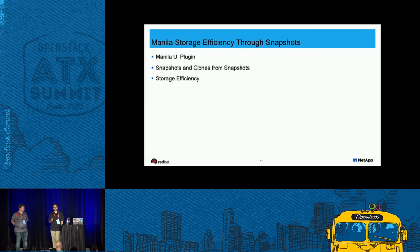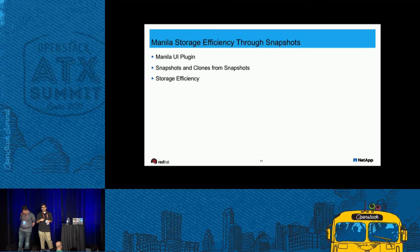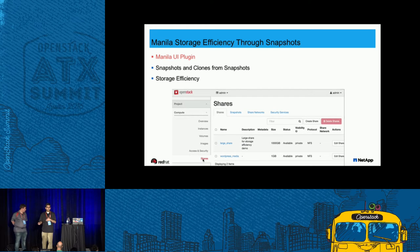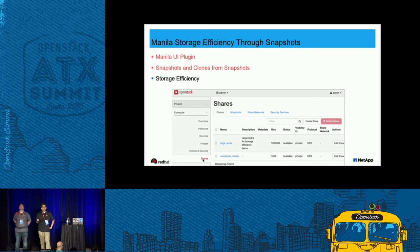The next demo we're going to show you is storage efficiency through snapshots. This exercise is going to be done using the Manila UI plugin. Some of you may already be familiar with Horizon, which is the UI, and Manila has a plugin for Horizon. Using the Manila UI plugin, you can create snapshots and you can create clones of snapshots, which gives you significant storage efficiency in the case of NetApp.